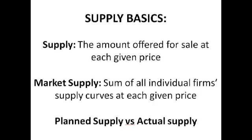Firms have a planned supply and then there's an actual supply. Planned supply is the amount that producers plan to produce at each given price, whilst actual supply is the actual amount that producers produce, which may differ from planned supply due to breakdowns in production, staff absences, or maybe excess — sometimes firms make too much by mistake.